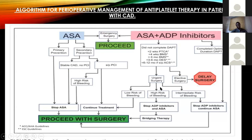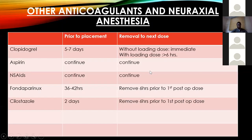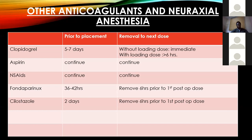This is the only situation where patients on dual antiplatelets will require bridging. The table also covers clopidogrel discontinuation prior to surgery — aspirin does not need to be stopped, and NSAIDs are the same. Fondaparinux should be stopped 36 to 42 hours before placement of neuroaxial technique, and the catheter should be removed six hours prior to the first postoperative dose. Cilostazol — commonly used in neurosurgery patients — requires stopping two days before placement of neuroaxial technique, and the catheter should be removed prior to the first postoperative dose.